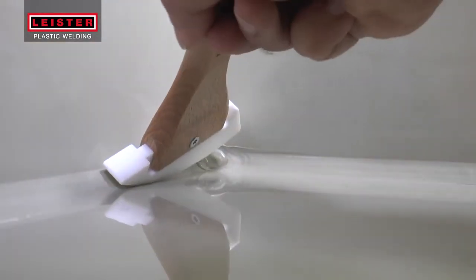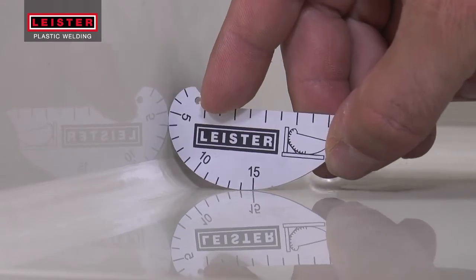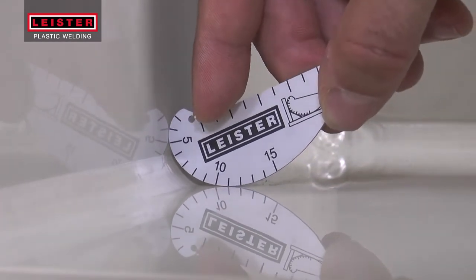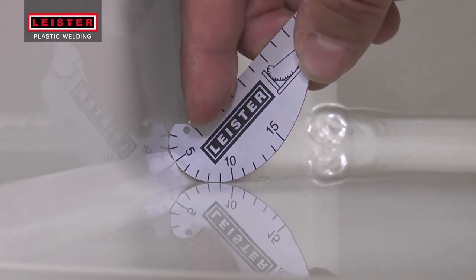The hot plast can be worked manually to provide a smooth professional finish. The weld bead dimensions can easily be checked with a welding gauge.